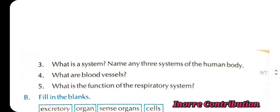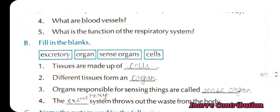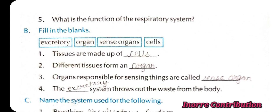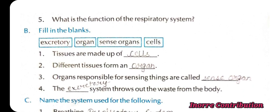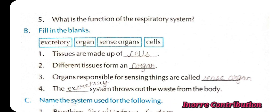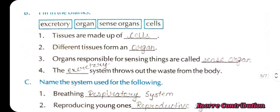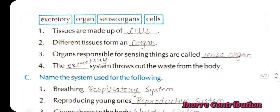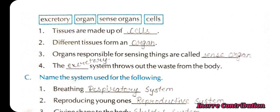Here comes the next exercise: Fill in the blanks. First: Tissues are made up of cells. Second: Different tissues form an organ. Third: Organs responsible for sensing things are called sense organs. Fourth: The excretory system throws out the waste from the body.